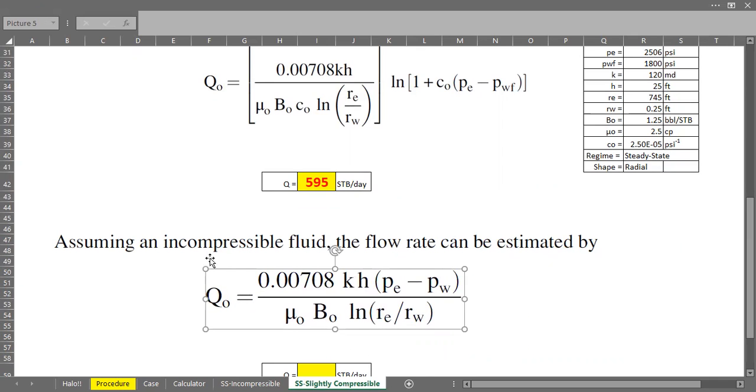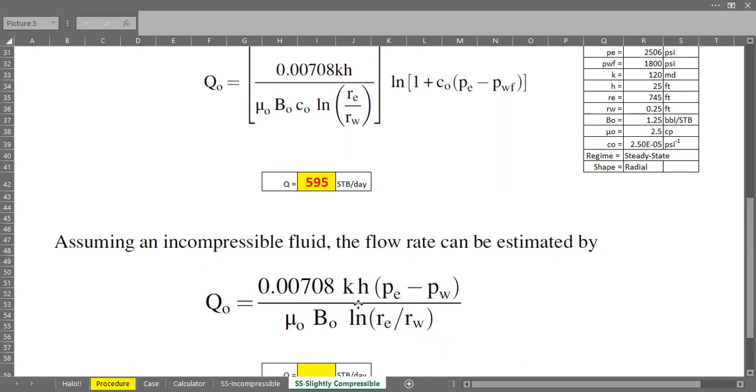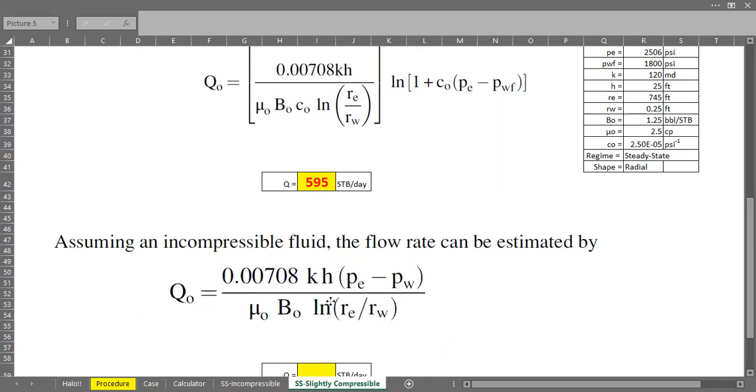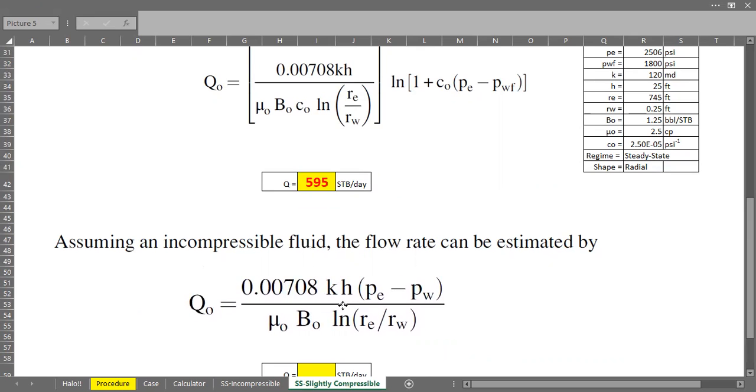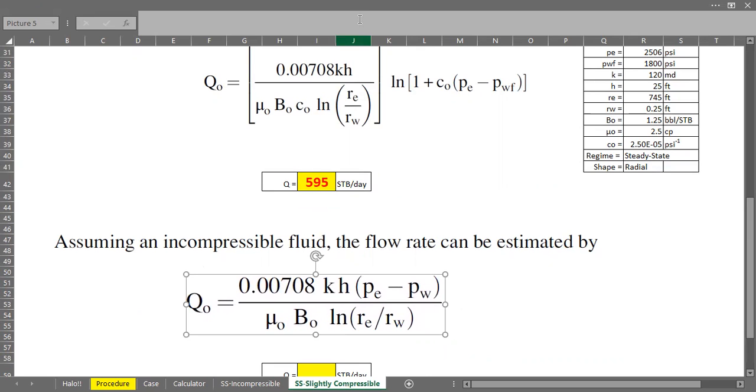Now we will assume incompressible fluid. And we can calculate the oil flow rate. All right. And this is the equation for steady state radial flow incompressible fluid. You can see we don't have oil compressibility in this equation.